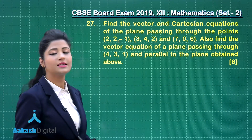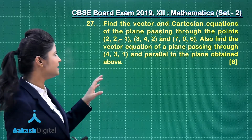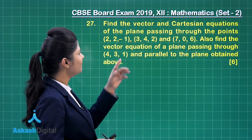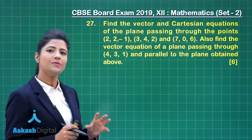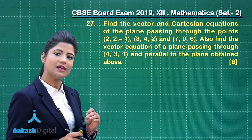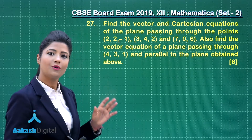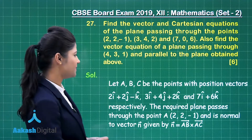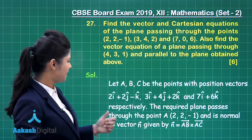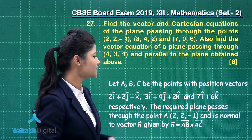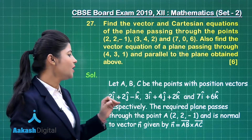As we are talking about a plane passing through these three given points, let us consider these points to be A, B, and C. Using these three points, we can obtain the position vectors: OA = 2i + 2j - k, OB = 3i + 4j + 2k, and OC = 7i + 6k. The equation of the plane passes through point A and is normal to N vector, where N = AB × AC.